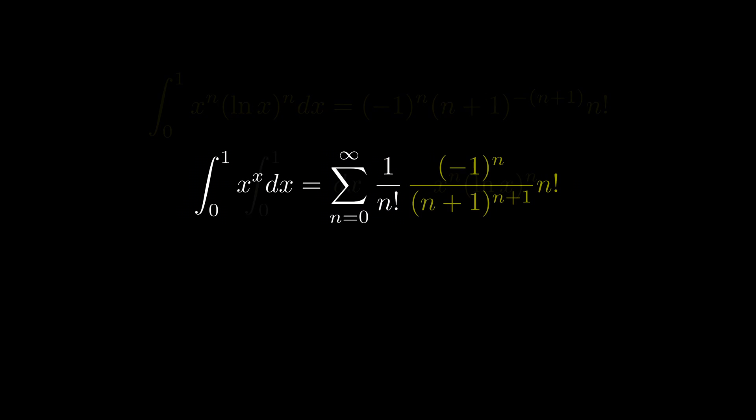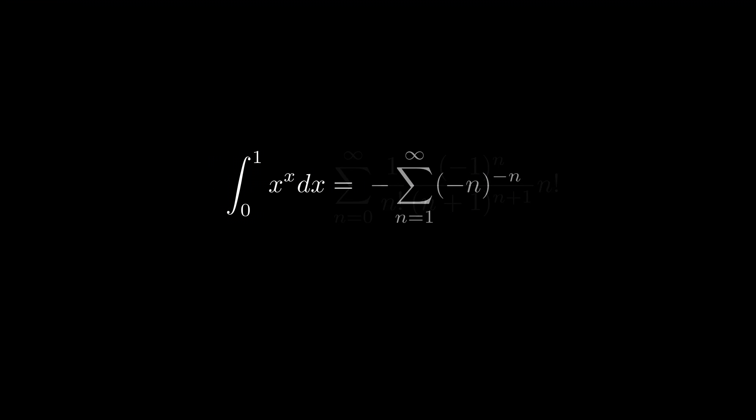It's time to substitute this integral back and n factorial just cancel each other. Re-index the summation from 0 to 1 we have a very clean and elegant identity.